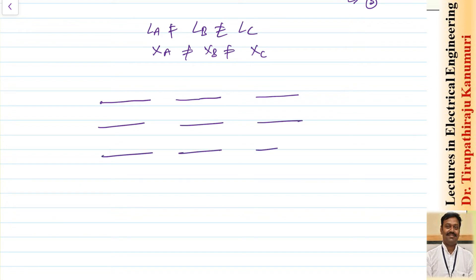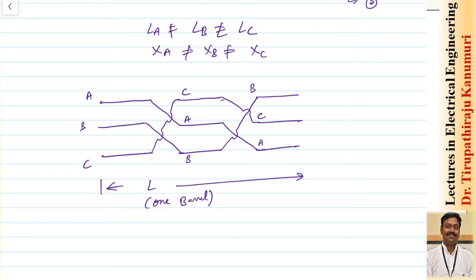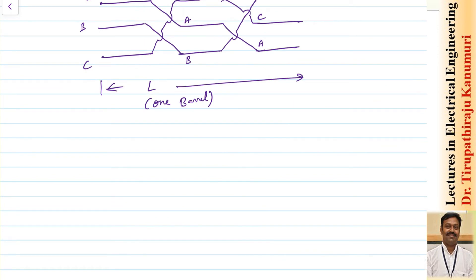For transposition, assume a total length L divided into three equal parts. Conductor A occupies each of the three positions for one-third of the total length, and similarly for conductors B and C. This is called one complete barrel. Because each conductor occupies each position for one-third of the length, the inductance of each conductor becomes the average of La, Lb, and Lc.